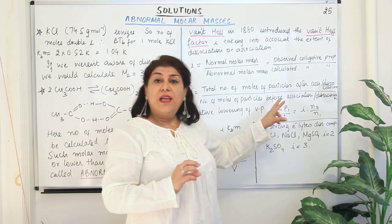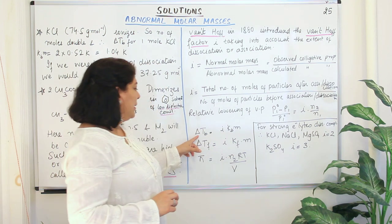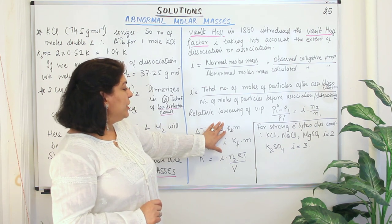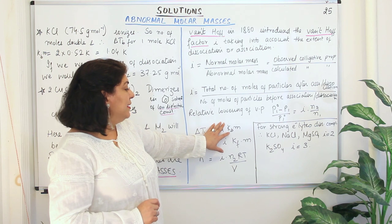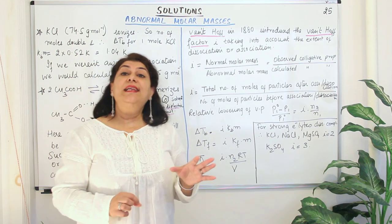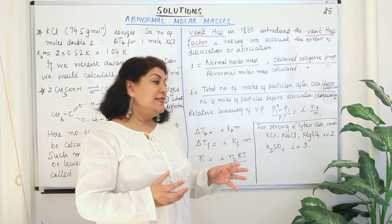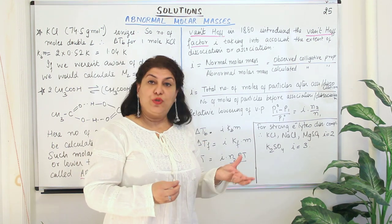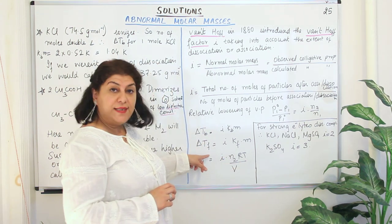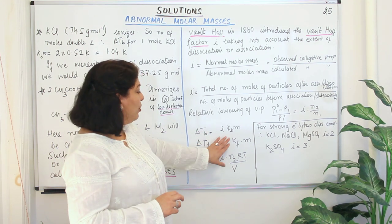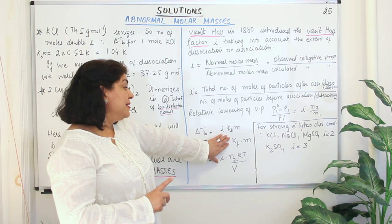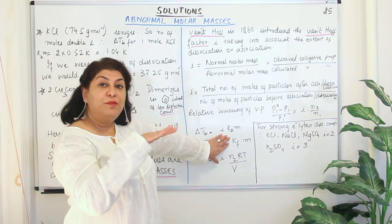Now if you look at the other formulae also — if you look at ΔTb, you will find that ΔTb is the elevation in boiling point. Elevation in boiling point is equal to Kb × M, where Kb is the ebullioscopic constant or the molal elevation constant for the solvent, and M is the molality of the solution. Molality is the number of moles of solute present in 1 kg of the solvent.